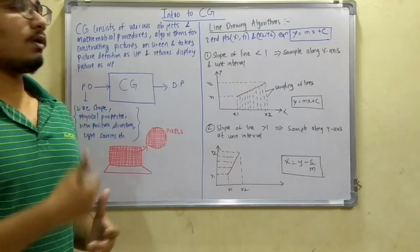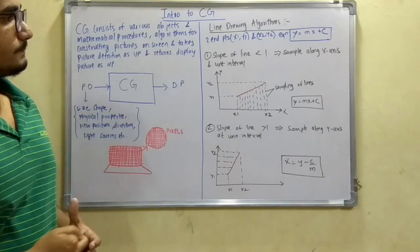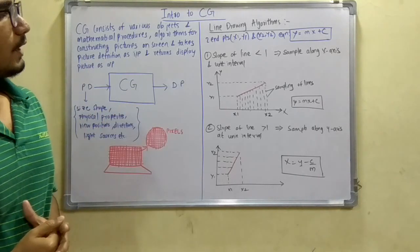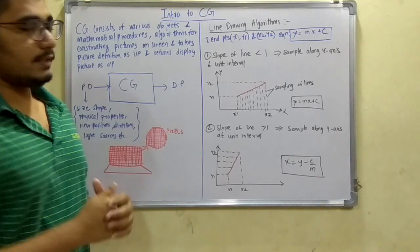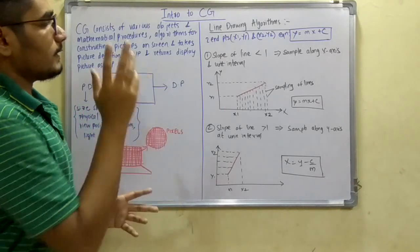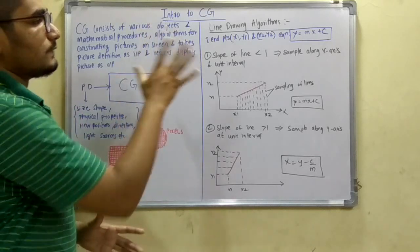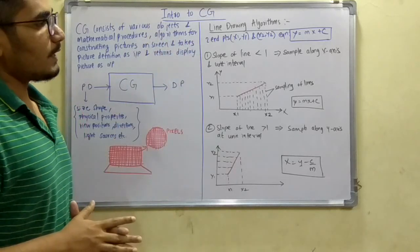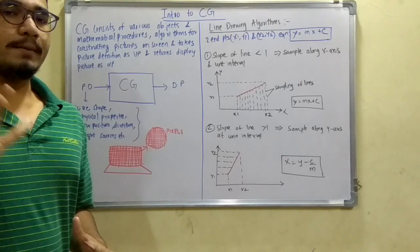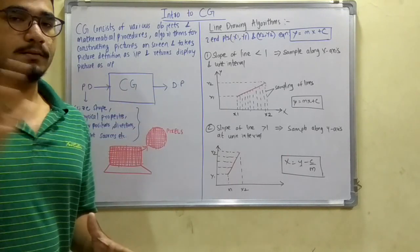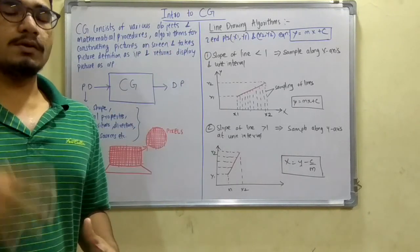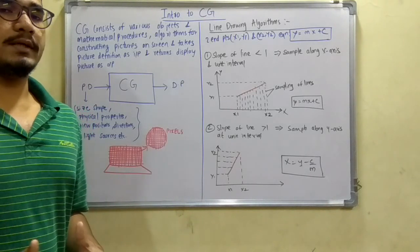These algorithms take two things as input: two endpoints, that is x1, y1 and x2, y2, and the equation y = mx + c, that is the slope intercept equation. These two inputs it takes in order to define a line and construct it onto the computer screen.